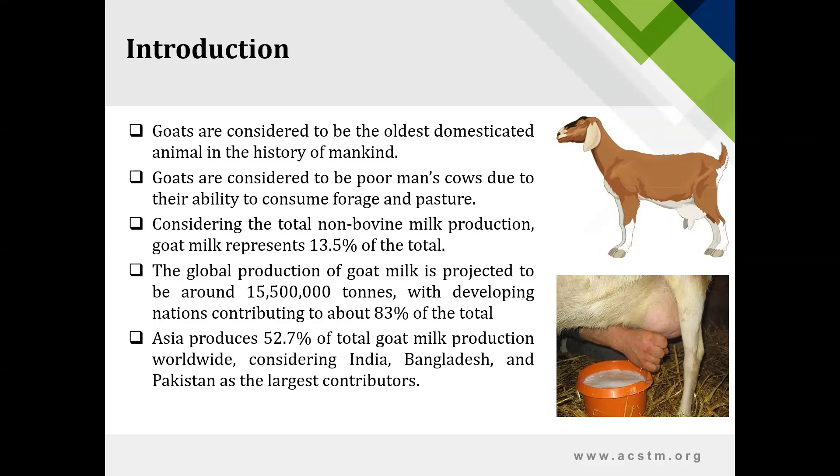Among all the continents, Asia is the largest contributor of goat milk, accounting for 52.7% of total goat milk production. Among the Asian countries, India, Bangladesh and Pakistan are the largest contributors.